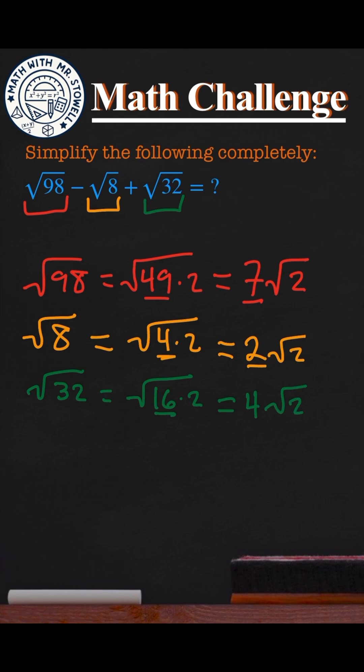All we have to do now is just remember what the positives and negatives are. So we have the square root of 98, which is 7 square root of 2, minus by square root of 8, which is minus by 2 square root of 2, and then plus square root of 32, which is 4 square root of 2.